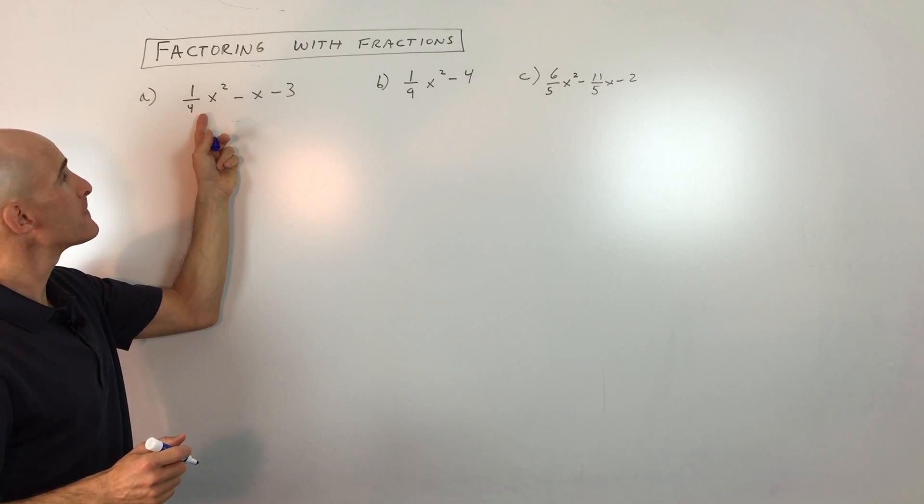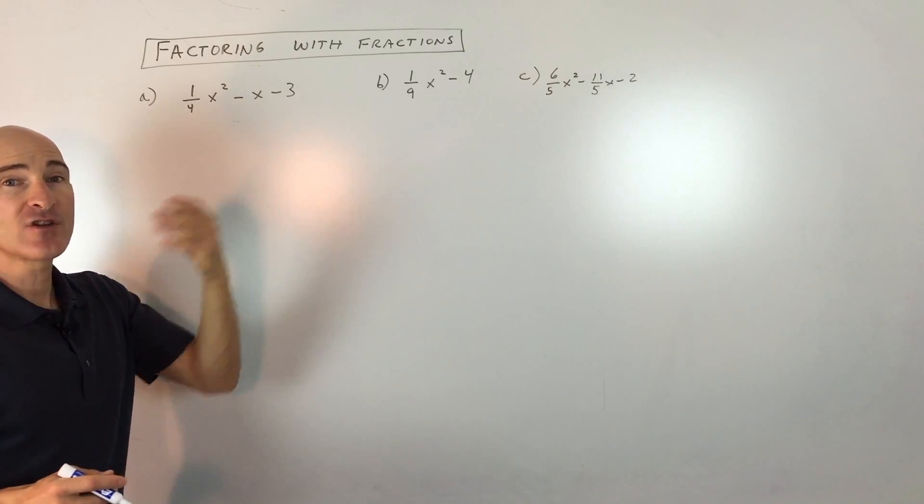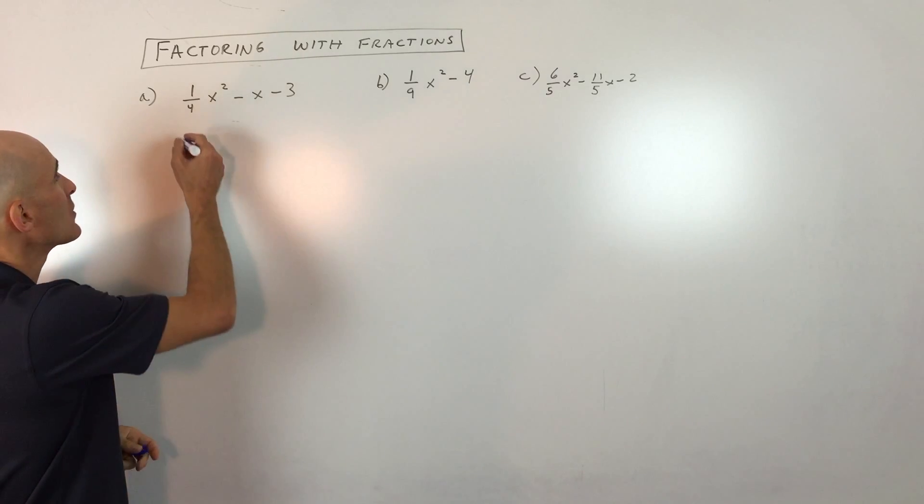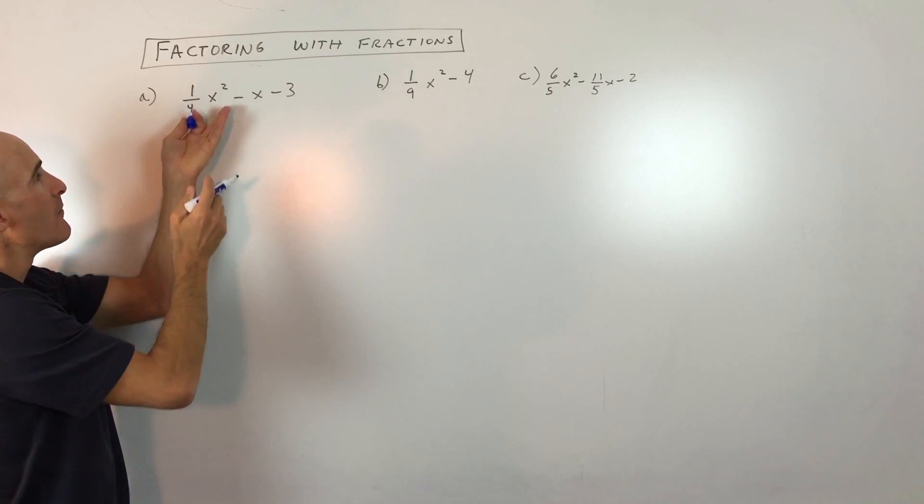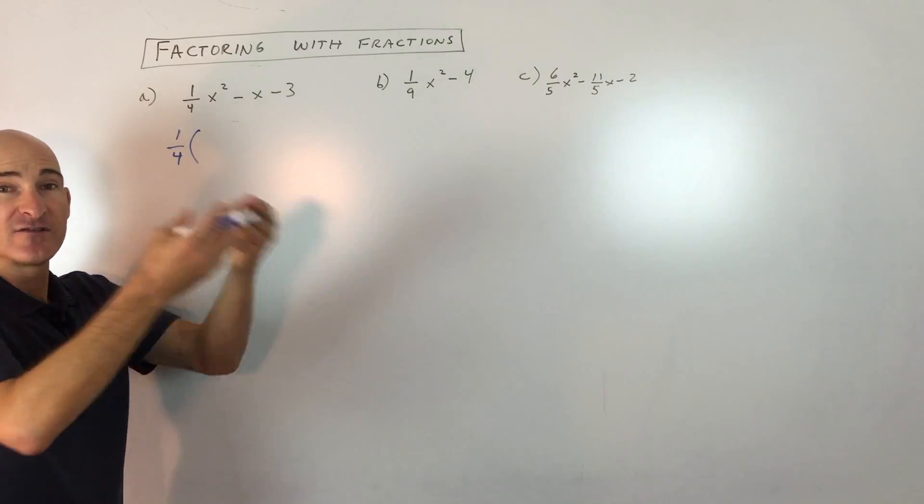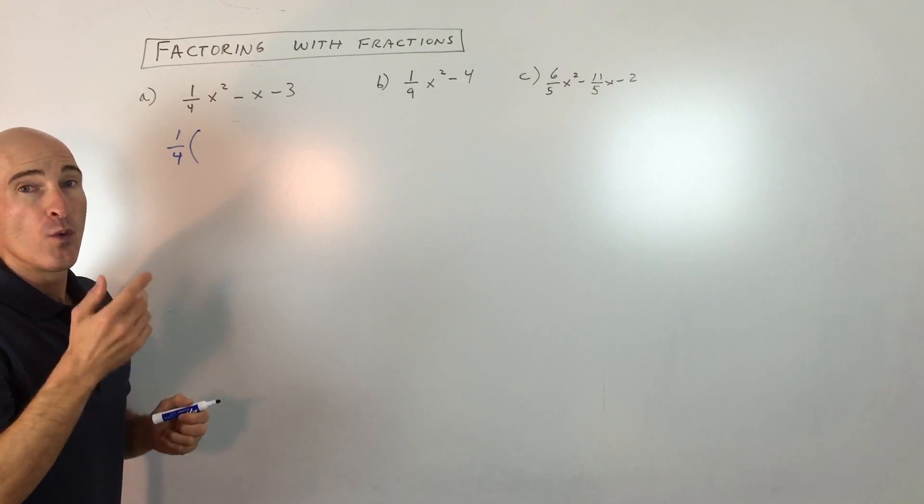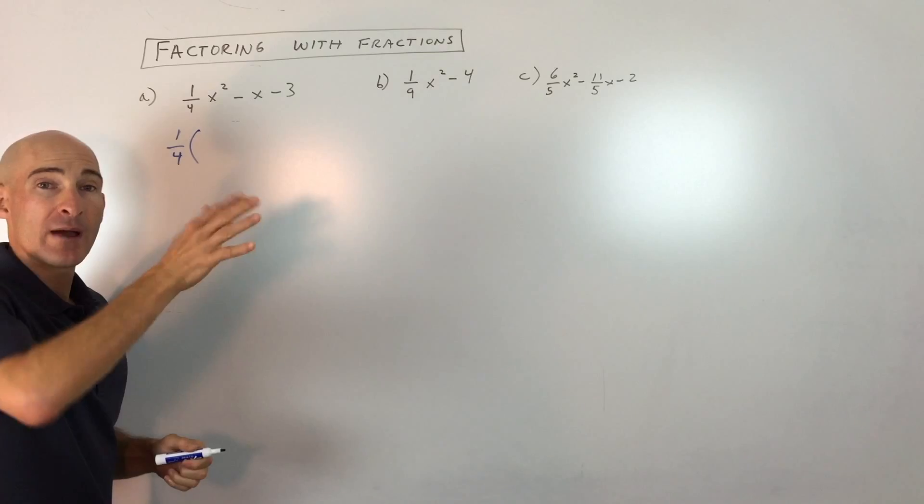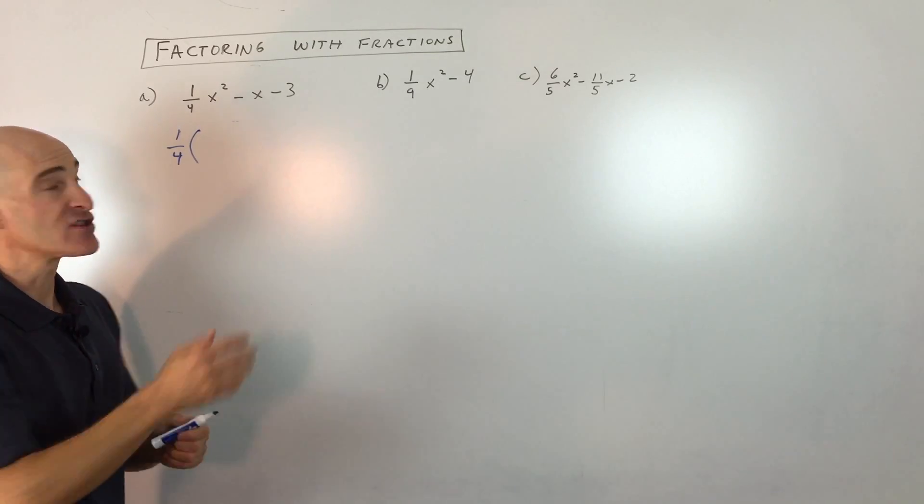You see how they have a one-fourth in here? What we're going to do is we're going to factor out that one-fourth. So what I'm going to do is I'm going to pull it out here in front. And when I do that, when you're factoring out one-fourth, that's like dividing out by one-fourth, what you have to do is you have to multiply by the reciprocal. Because multiplying and dividing are inverses.